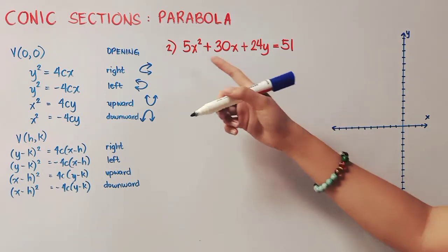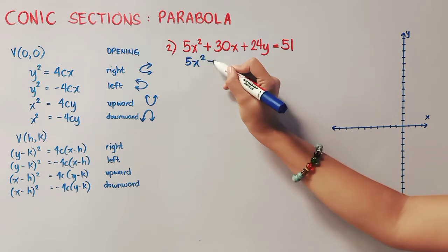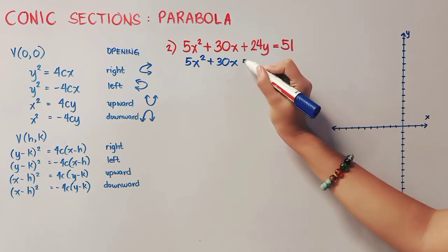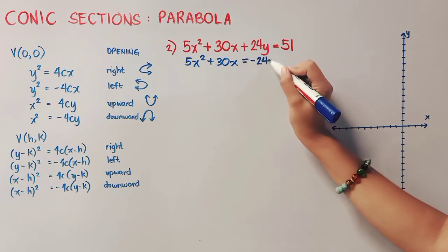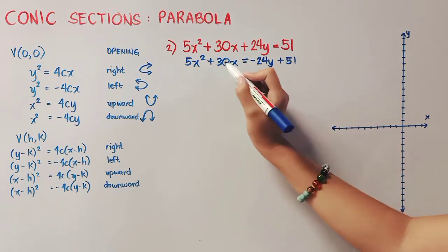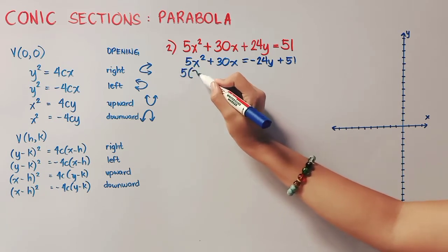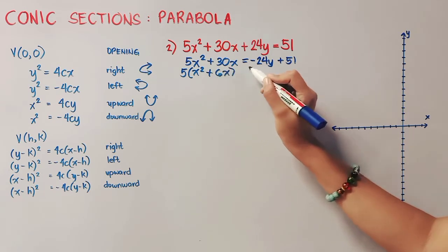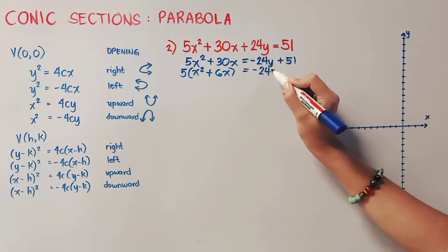In number 2, as you can see, our x is raised to 2. Therefore, all terms with variable x should be placed on the left side and the rest will be on the right side. So from positive, it became negative 24. And then we just copied 51. In here, 5 is a common factor. So we'll take it out. What's left is x squared. And then 30 divide 5 is 6. And then we will just copy whatever is in the right side.